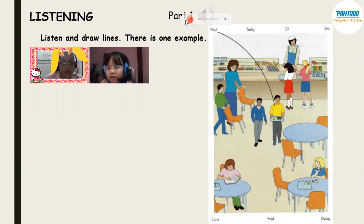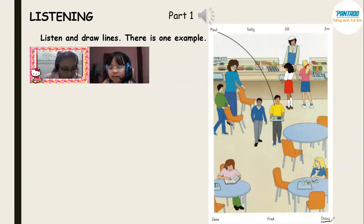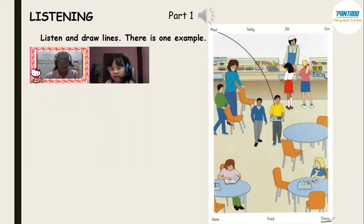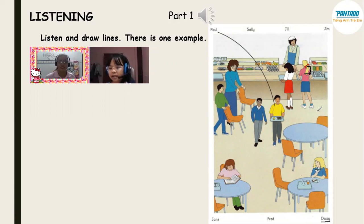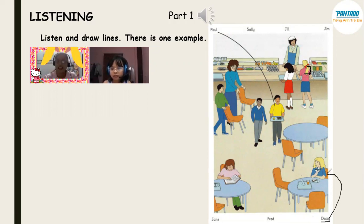So we are looking for — what is her name? Her name is Daisy. Can you tell me where is Daisy? What is the color of her hair? Her hair is yellow, and she is eating sandwiches. She is sitting down and eating a sandwich. Very good, Lucy!